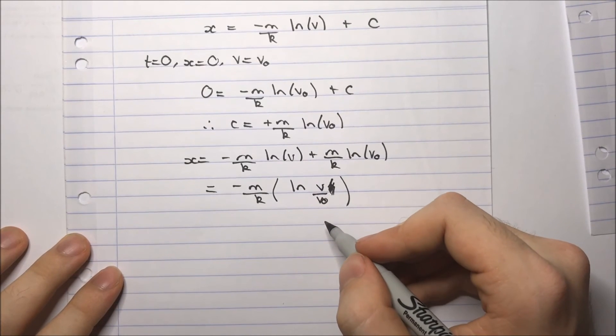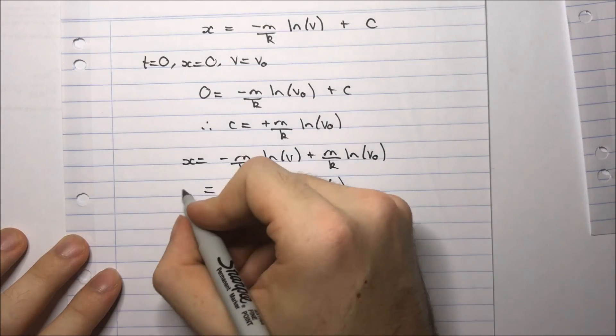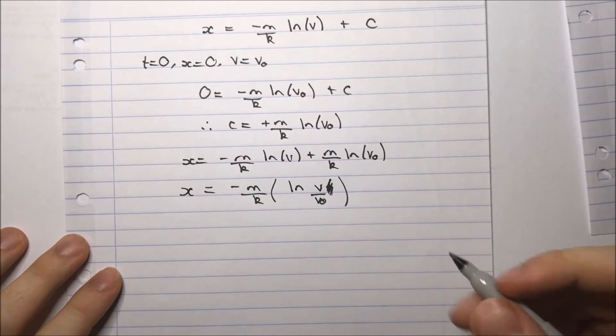Now, we wanted the velocity in terms of the distance travelled, which means we want v in terms of x. At the moment, we just have x in terms of v. So let's do a bit of rearranging.